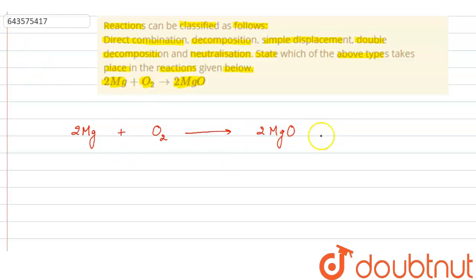We have to specify the type of reaction. So, from the given reactions, first is direct combination. Direct combination is basically those reactions in which 2 or more compounds combine to form a single new product.